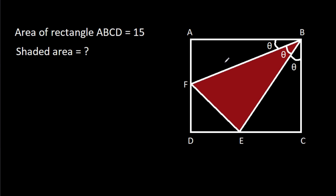In this video, we have been given that angle ABF is theta, angle EBF is theta, angle CBE is theta, and the area of rectangle ABCD is 15. We have to find the shaded area.